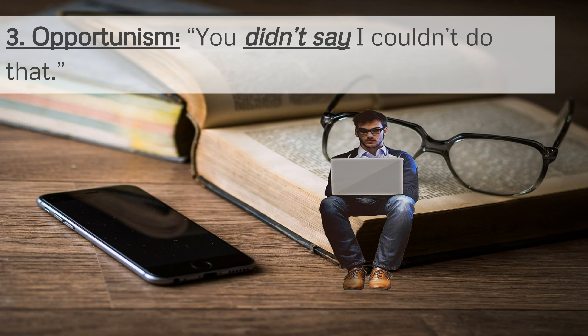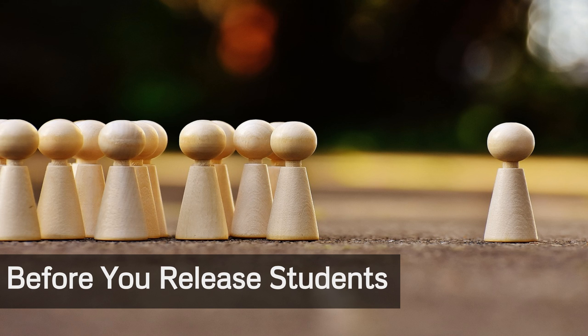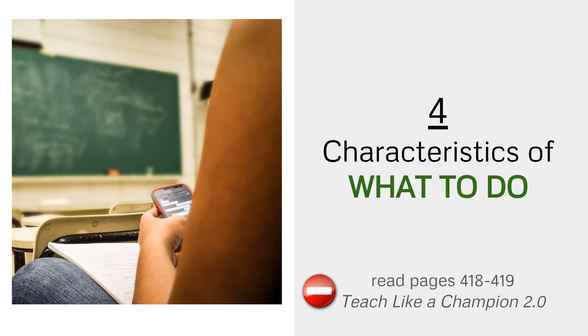The final off-task behavior is opportunism, which may sound like, 'You didn't say I couldn't do that.' This type of behavior could really get under your skin if you're not careful, and is best avoided by being as clear and precise as possible. During your 10-minute mini-lesson, be crystal clear about what to do when you direct students to work collaboratively. Pause the video now and read more about the four characteristics of what to do on pages 418 to 419 of Teach Like a Champion 2.0. Stop before the title, What to Do 2.0.